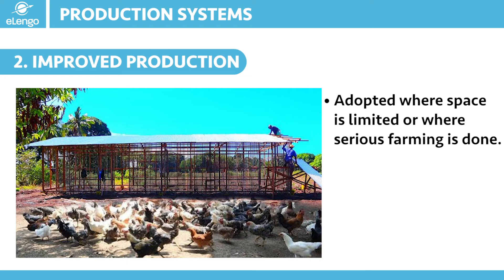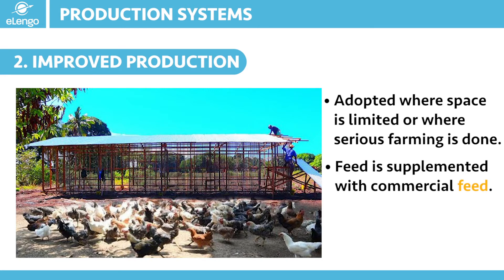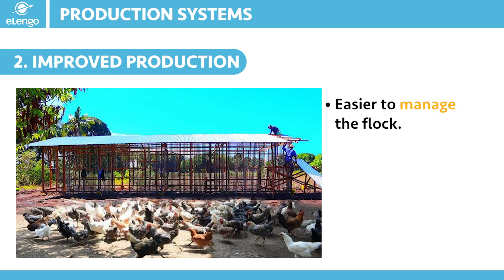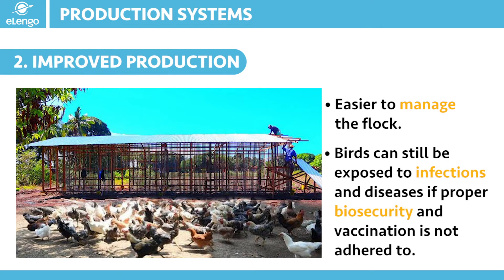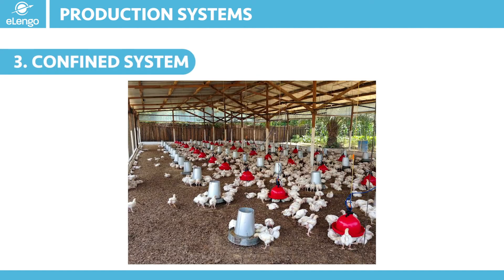In this system, feeding is supplemented with commercial feeds for higher production. The main advantage of using this system is that the birds are in a controlled environment and therefore become easier to manage. The main disadvantage is that the birds will still be exposed to infectious diseases, mainly due to overstocking or overcrowding, and when farmers do not adhere to cleanliness and hygiene at the farm level, we are going to encounter challenges with disease infections.